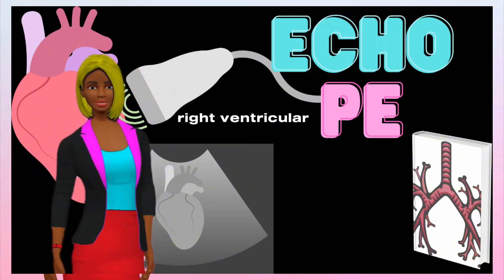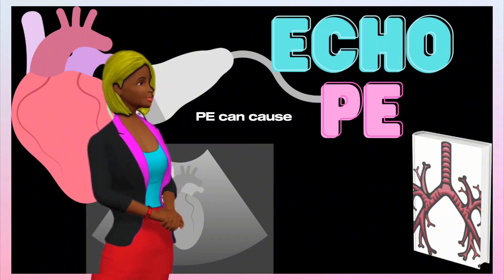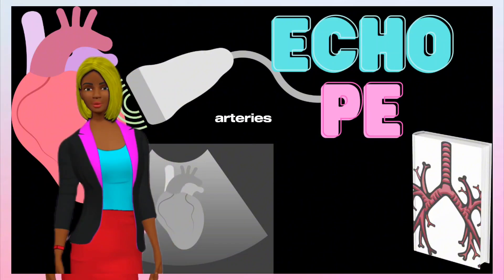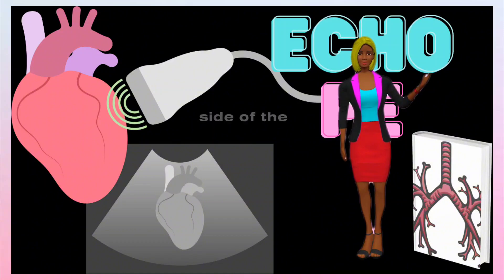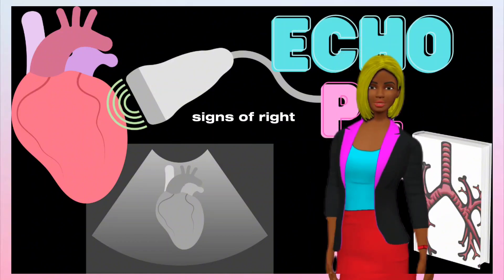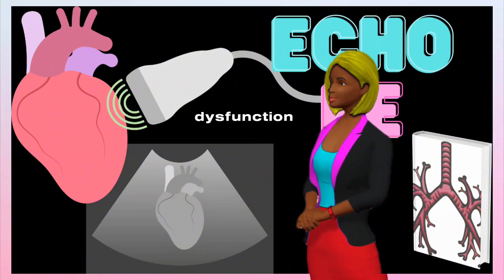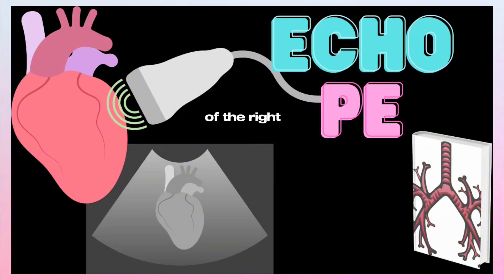1. Right ventricular (RV) dysfunction. PE can cause increased pressure in the pulmonary arteries, leading to strain on the right side of the heart. Echocardiography may reveal signs of right ventricular dysfunction, such as dilation and reduced contraction of the right ventricle.